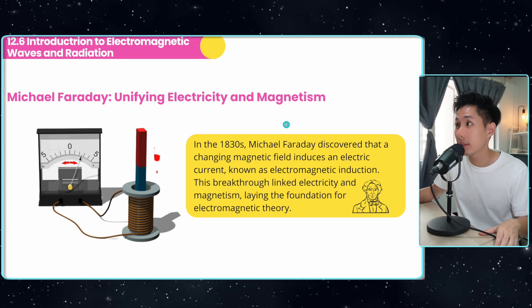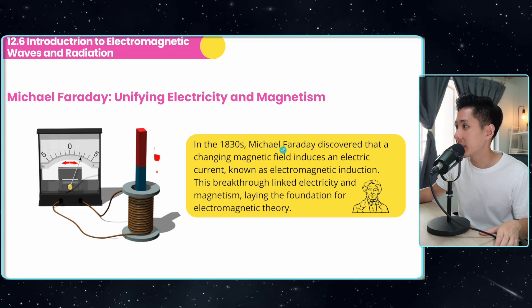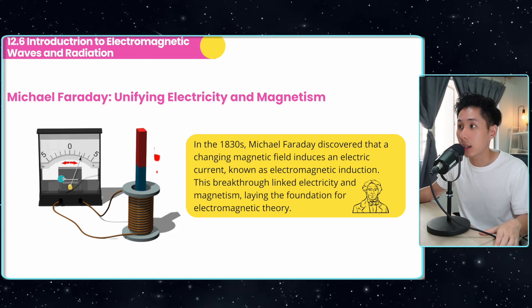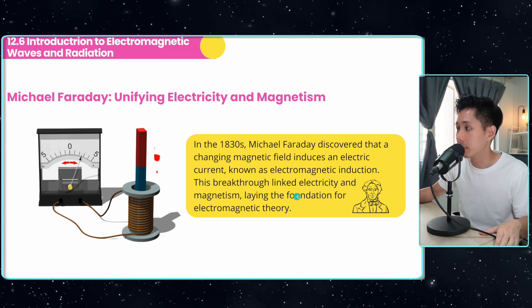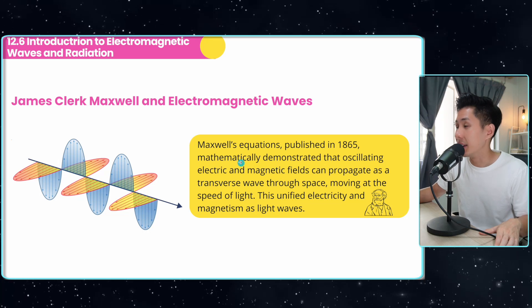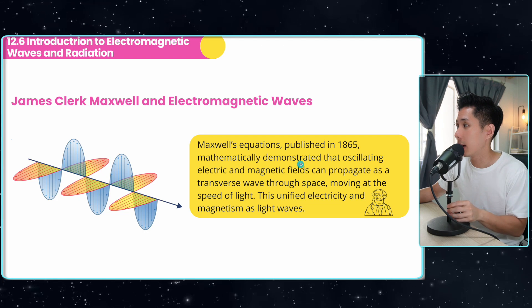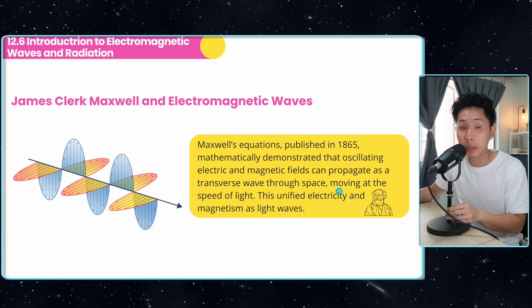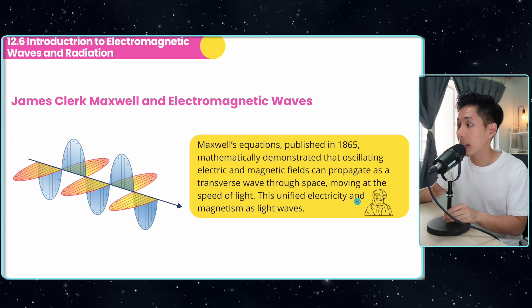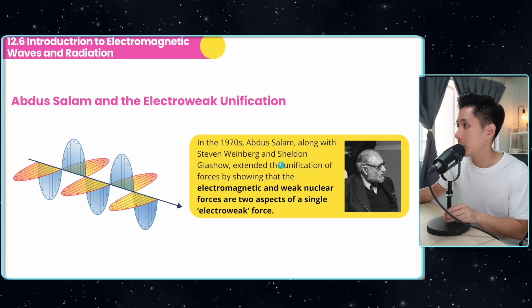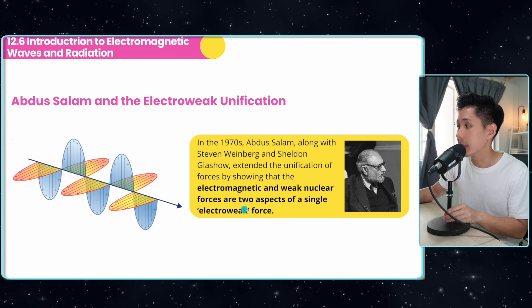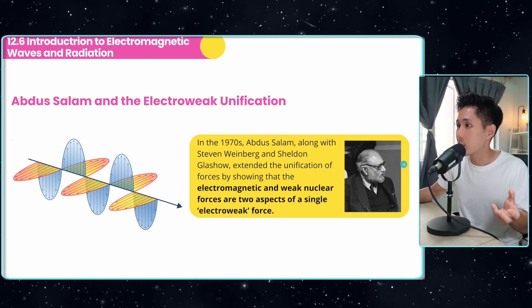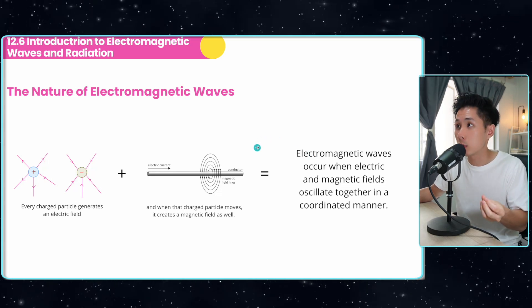Now let's look at electromagnetic waves, which are a combination of electricity and magnetism. In 1830, Michael Faraday discovered that a changing magnetic field induces an electric current — you can see a circuit with no battery where current is induced — linking electricity and magnetism and laying the foundation for electromagnetic theory. Maxwell, publishing in 1865, showed that oscillating magnetic and electric fields can propagate as a transverse wave through space at the speed of light — essentially, light is an electromagnetic wave. Abdus Salam later showed that electromagnetic and weak nuclear forces are two aspects of a single electroweak force.